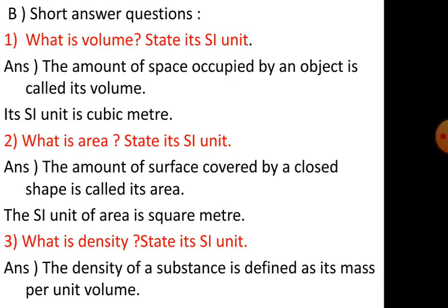B, short answer questions. Question 1: what is volume? State its SI unit. The amount of space occupied by an object is called its volume. Its SI unit is cubic meter.